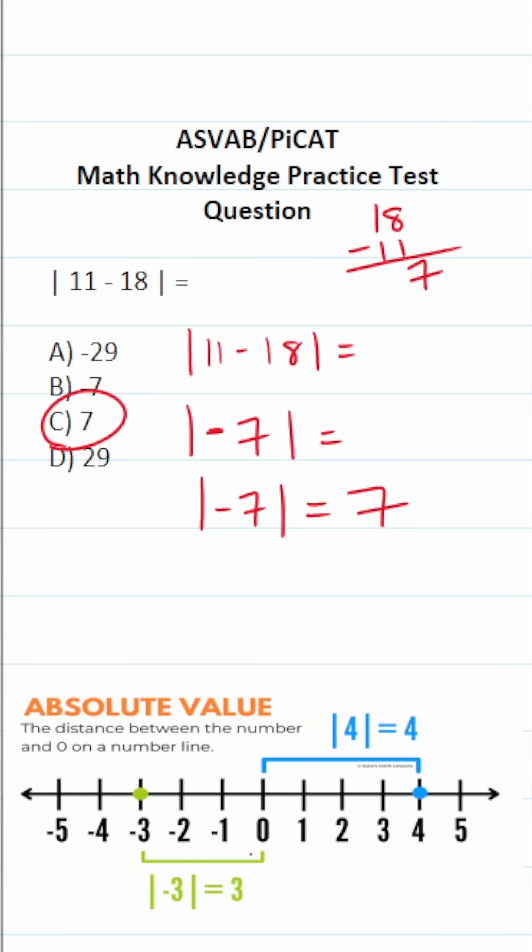And you might be asking yourself, why is the absolute value of a negative always positive? Because absolute value is defined like this. It's the distance between the number and 0 on the number line.